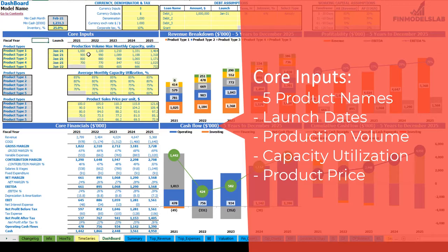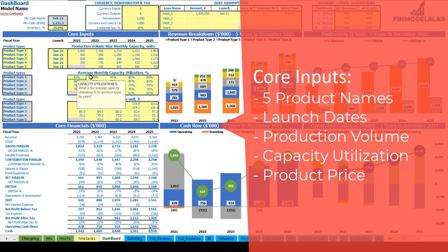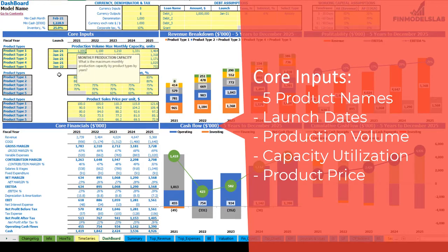The next step is to set up your production volume — maximum monthly capacity in units. This means that in 2021 for product type one you can produce a maximum of 1,000 units per month. Obviously you will not always produce the maximum monthly capacity, so there is a monthly capacity utilization percentage by product types and by years. If you put 80%, it means that for 2021 on average you'll produce 800 units per month instead of the maximum 1,000.